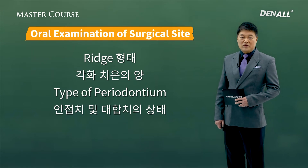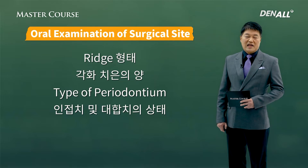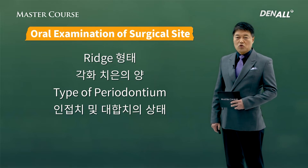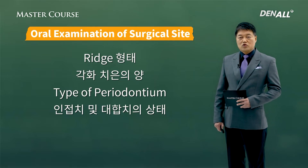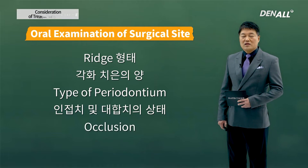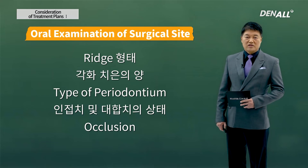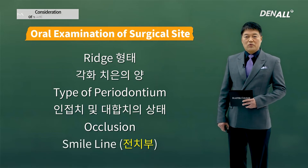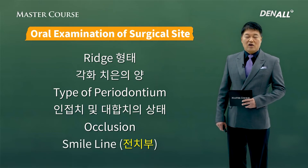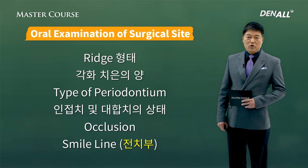Adjacent teeth and opposing teeth need to be checked — whether adjacent teeth are tilted mesially or opposing teeth are extruded, and whether there is normal occlusion with sufficient space. Check whether occlusion is normal or if there is a cross bite. In the anterior region, check how the smile line is before surgery so you can pay more attention ahead.